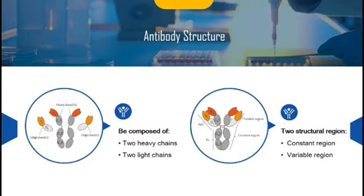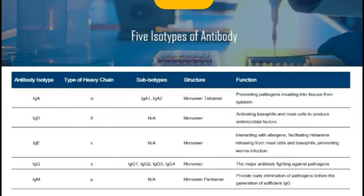On the light chain there are two parts. The distal part is the variable region of the light chain, and the proximal part is the constant region of the light chain, denoted by VL and CL respectively. Similarly, the heavy chain is divided into four parts. The distal one-fourth is the variable region, denoted by VH, and the proximal three parts are the constant regions numbered 1, 2, and 3, denoted by CH1, CH2, CH3. The constant region is identical in all antibodies of the same isotype, but differs in antibodies of different isotypes.